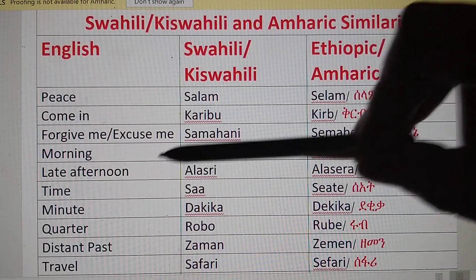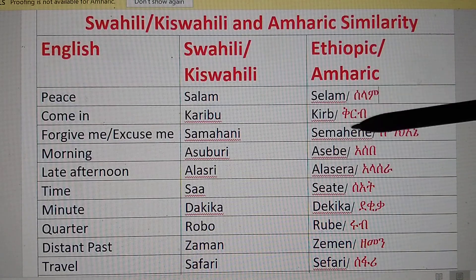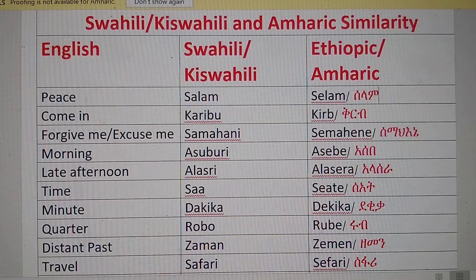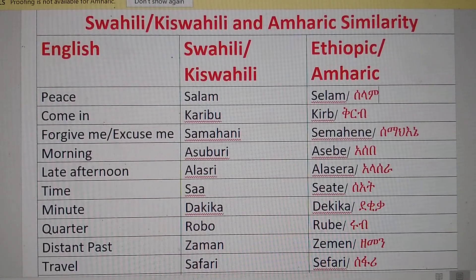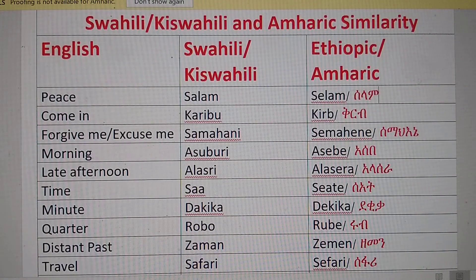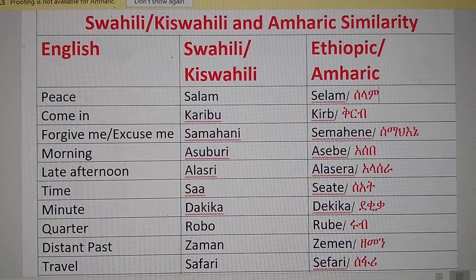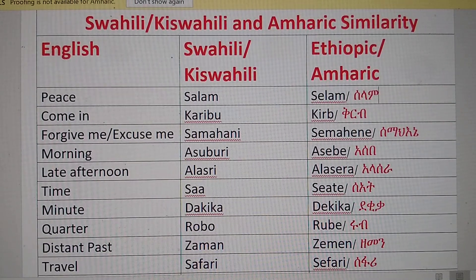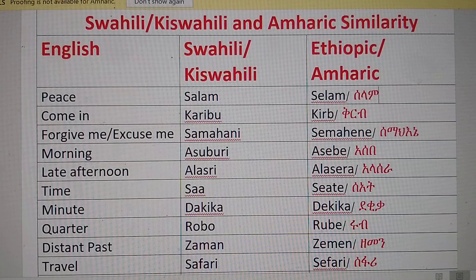The next word is 'late afternoon.' In Swahili it is 'Alasri.' In Amharic, a close word is 'Alasera,' which means 'it doesn't allow you to work.' In the afternoon it gets late, or there is too much heat, so you rest and don't work. The common root word is likely 'Asarra,' from which comes both 'Alasri' and the Amharic form.